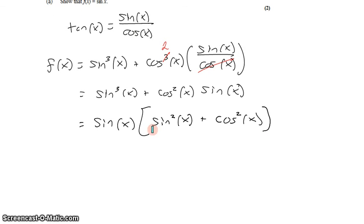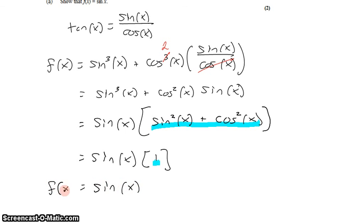And what that leaves me in here with is my Pythagorean theorem identity, sine squared plus cosine squared, which we know is just one. 1 times sine of x is just sine of x. So I'm able to show that f of x is also equal to just sine of x.